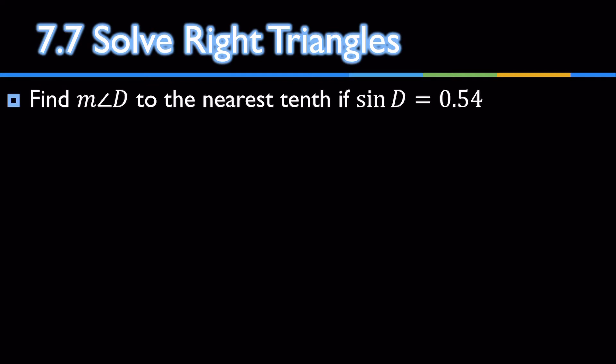Let's find D to the nearest tenth if sine of D is 0.54. I am looking for the measure of an angle. To find the measure of an angle, you must use the inverse. So, it'll be inverse sine of 0.54, which is about 32.7 degrees. Remember, it's an angle that we looked for, so it's degrees.